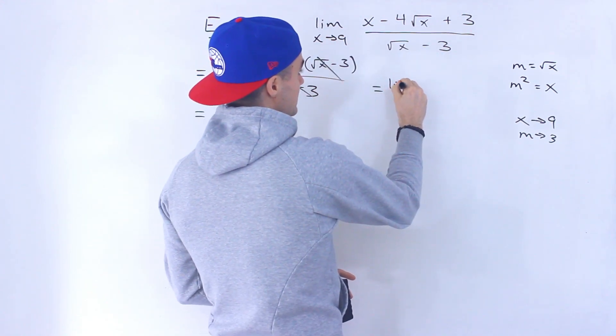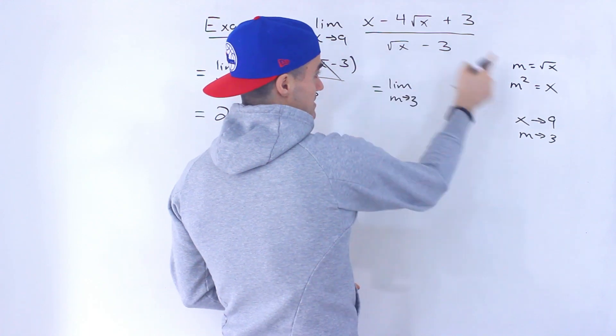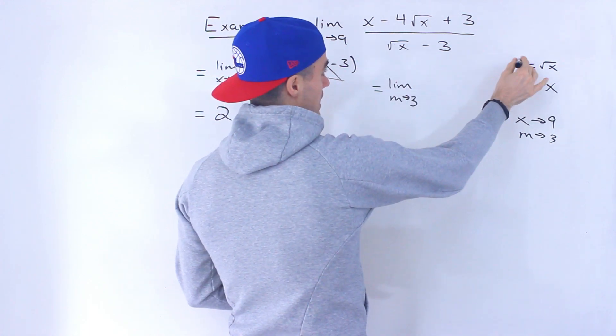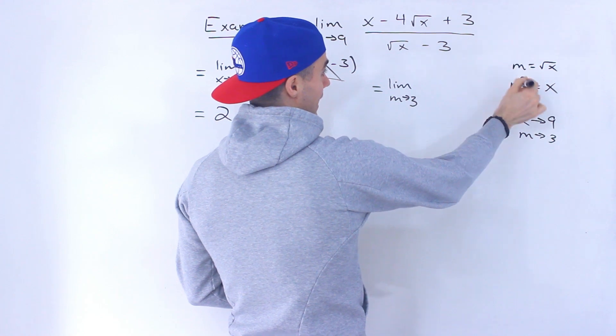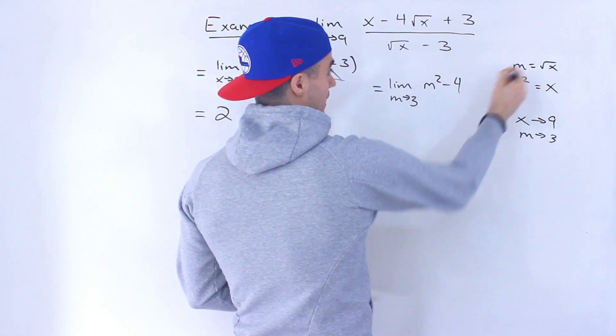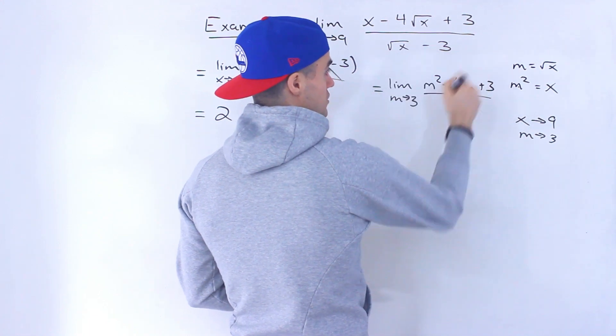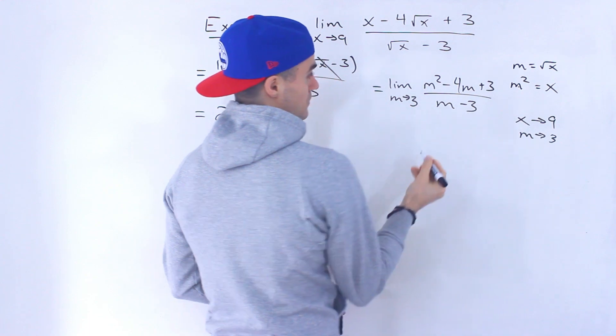So for this limit x approaching 9, we could put m approaches 3. For this x here, I'm going to put an m squared minus 4 root x is m, then we got plus 3 over root x, which is m, then we got minus 3, like that.